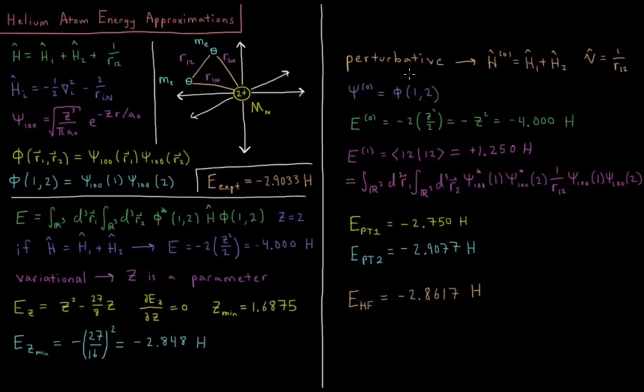Next approach we could try is perturbation theory. So let's say that our reference Hamiltonian is h1 plus h2, the kinetic energy of each electron and their attraction to the nucleus. And let's treat 1 over r12, the hard part of this, as a perturbation. So our psi nought is just each electron being in the 1s orbital. So e nought, our reference Hamiltonian energy, is going to be negative 4 Hartrees, as we saw there.